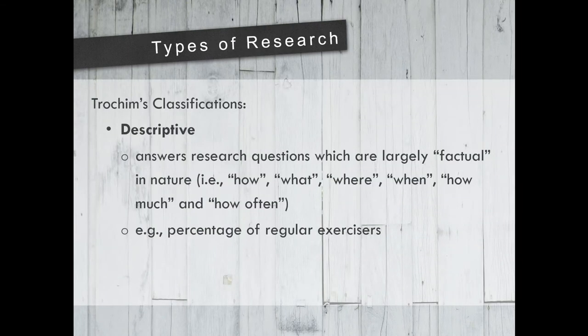Let us proceed to the different types of research. According to Trochim's classification of research, we first have descriptive research, which answers research questions that are largely factual in nature — questions like how, what, where, when, how much, and how often. For example, a study on the percentage of regular exercisers would be considered descriptive — simply describing what is the percentage of regular exercisers in Baguio City or in Burnham Park.